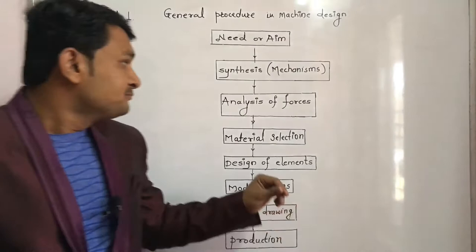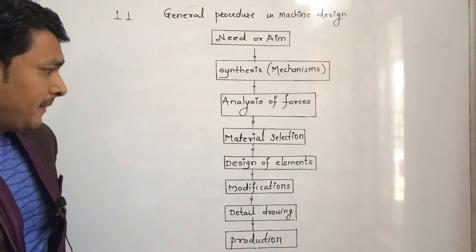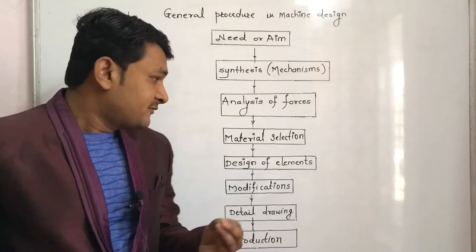In this analysis of forces, we have to find out the forces acting on each member of the machine and the energy transmitted by the materials. After that is Material Selection. The selection of material is done according to the transmission, availability, cost, and environmental conditions.